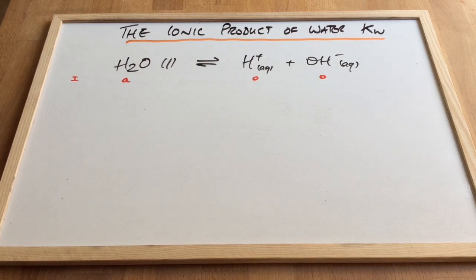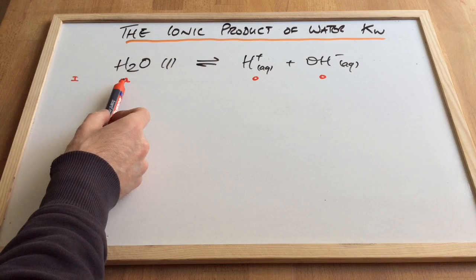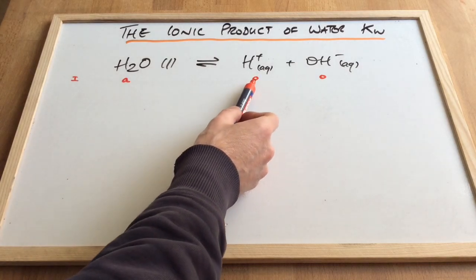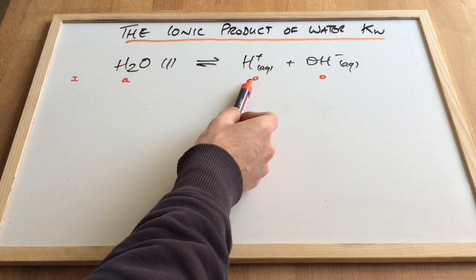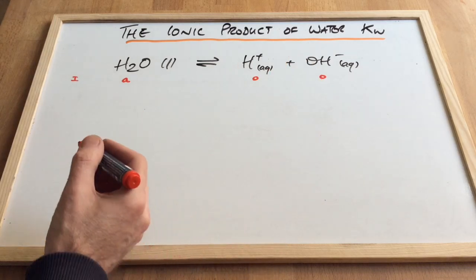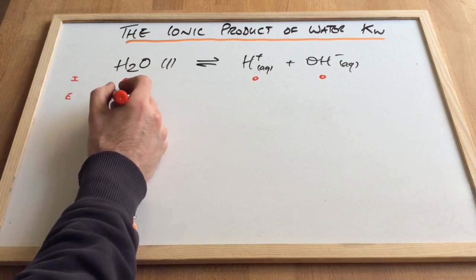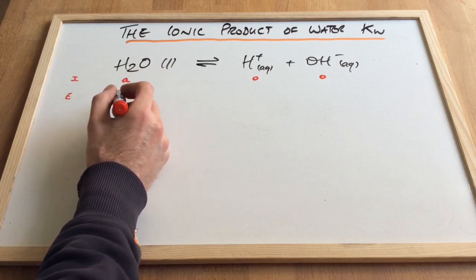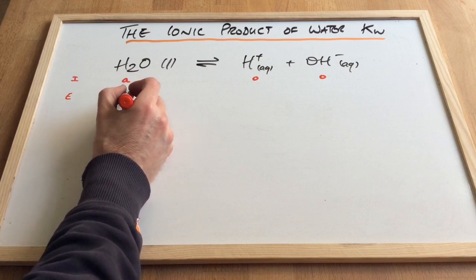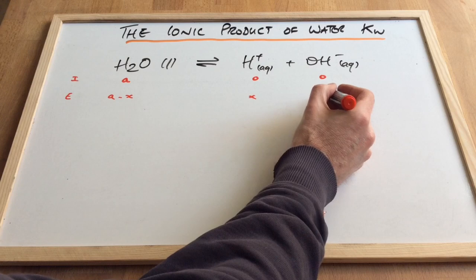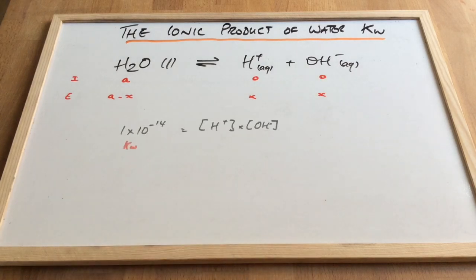So we'll just do a quick KC type calculation now. So the initial concentration of water, let's say, is A. So that means initially we have a zero concentration for H+ and OH-. And let's say, at equilibrium, X dissociates. Remember, for every 500 million, that X would be 1. So that would be A minus X. And that would be X. And that would be X.